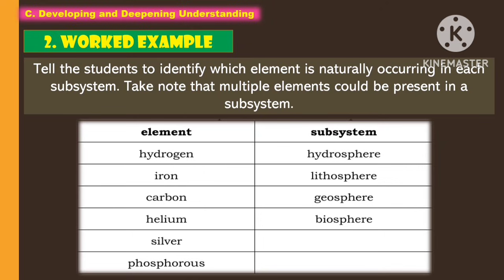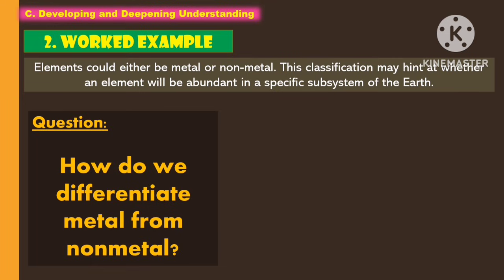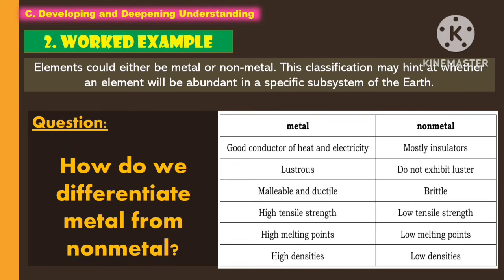For the work example, tell the students to identify which element is naturally occurring in each subsystem, taking note that multiple elements could be present in a subsystem. For part 2 of the work example, elements could either be metal or non-metal, and this classification may hint at whether an element will be abundant in a specific subsystem of the earth. So how do we differentiate metal from non-metal?